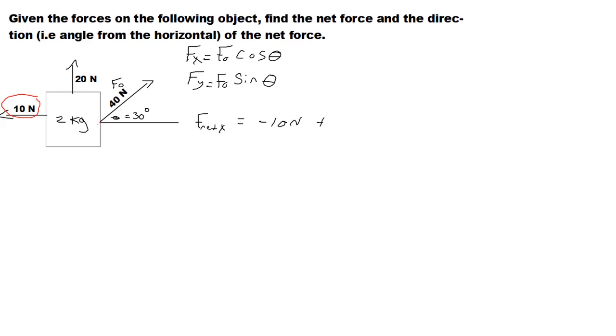40 times the cosine of 30 is going to give you a value of 34.64 approximately. And let's find the F net in the y direction.